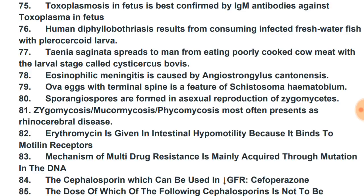Eosinophilic meningitis is caused by Angiostrongylus cantonensis. Ova eggs with a terminal spine are a feature of Schistosoma haematobium.